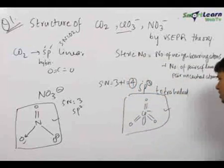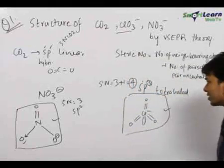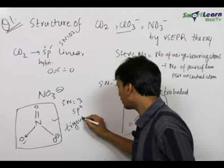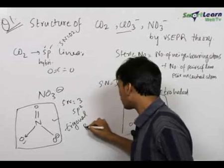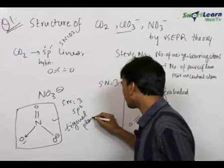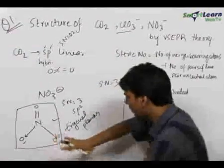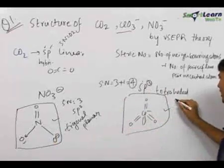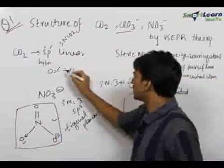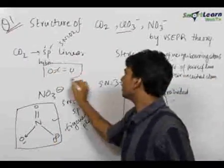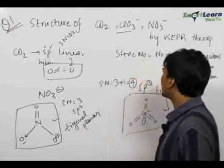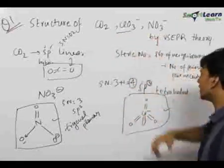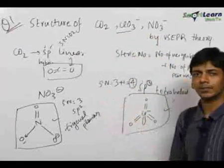The final structure for NO3⁻ is trigonal planar. For ClO3⁻, it is tetrahedral, and for CO2 it is SP hybridized and linear. So we get the final answers for the structures of CO2, ClO3⁻, and NO3⁻ respectively. Thank you very much.